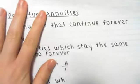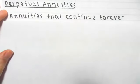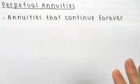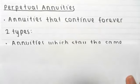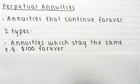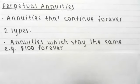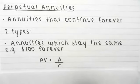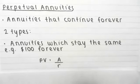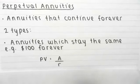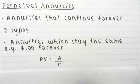A perpetual annuity is simply an annuity that continues forever. The first type is an annuity that stays the same forever — for example, $100 starting now and continuing forever — calculated as A divided by R, where A is your annuity value ($100) and R is your interest rate (e.g., 10% per annum). R must be in the same time unit as your cash flows.